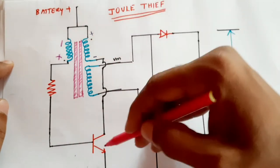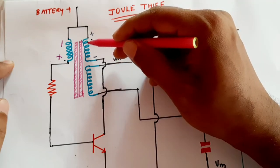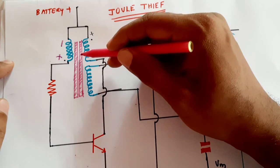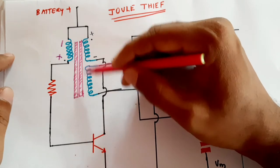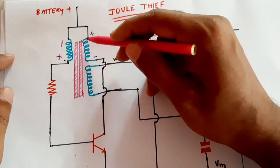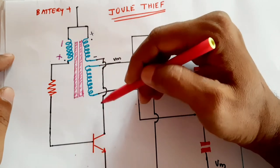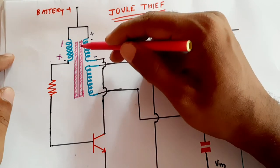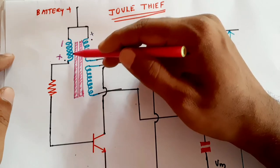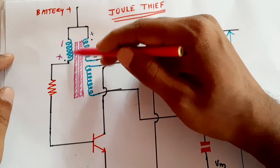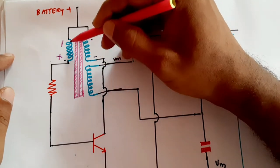After a particular point, the core becomes saturated — it has reached its maximum flux density. If more current is increased, there will be no change of flux. So flowing more current has no effect — there is no change in flux and therefore no voltage is developed across the winding.